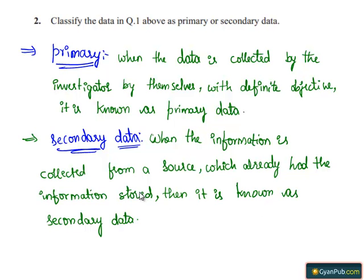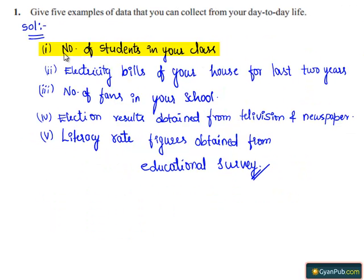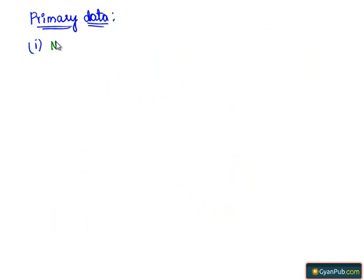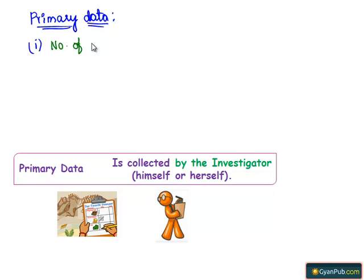Now, as we know what is primary data and secondary data, let's see question number 1 once again. Number 1: number of students in your class. This can be collected by the investigator himself. Hence, number 1 is known as primary data — that is, number of students in your class.